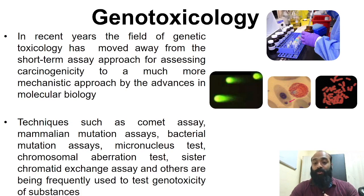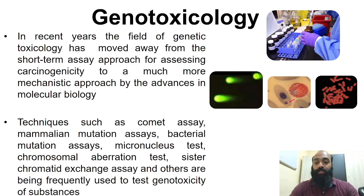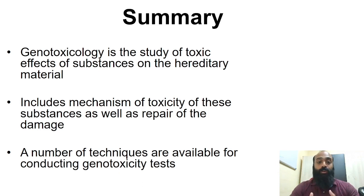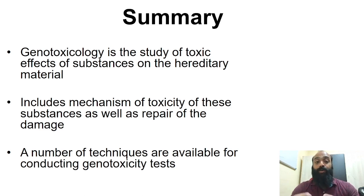Different tests are done routinely — in mice, in vitro cultures, in Drosophila, or even in plants. These include the comet assay, the micronucleus test, the chromosomal aberration test, the sister chromatid exchange assay, and many others, which are used routinely to test the genotoxicity of different compounds. In summary, genotoxicology is the study of toxic effects of substances on the hereditary material, including the mechanism of toxicity and the repair of damage. A number of techniques are available for conducting genotoxicity tests used by scientists around the world. In the next video I will be talking about DNA damage, DNA repair, and other related topics.